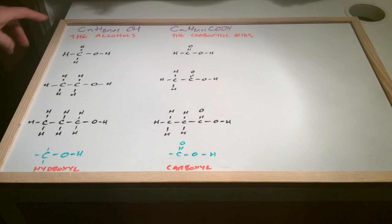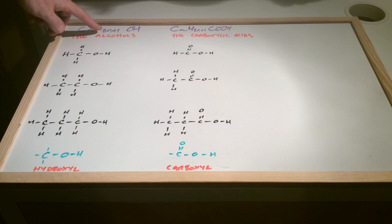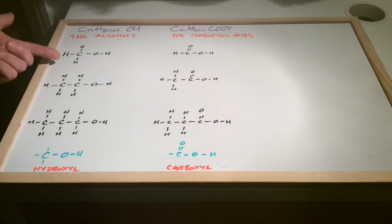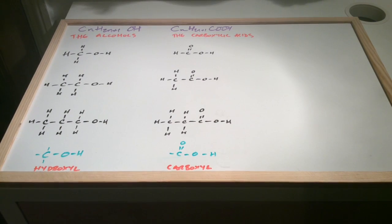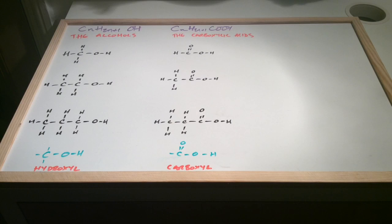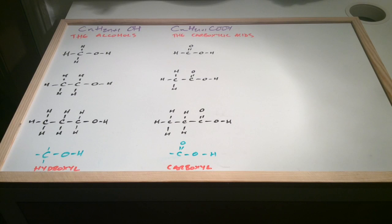When n is 1, we would have 2 times 1 plus 1, so 3 hydrogens — which is CH3 and then the OH functional group. The carboxylic acid general formula looks very similar: we've got CnH2n+1 again, and then the functional group, the COOH.